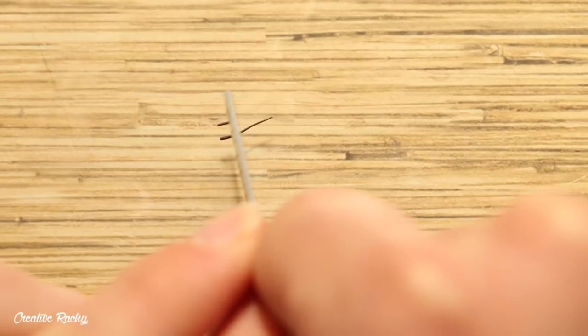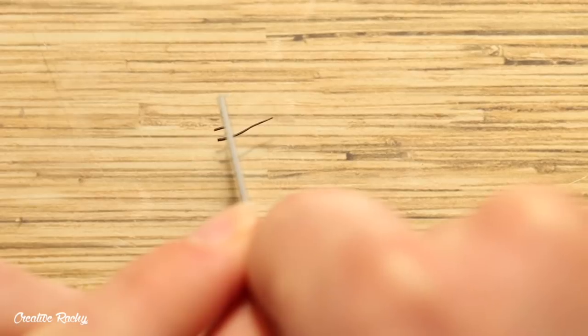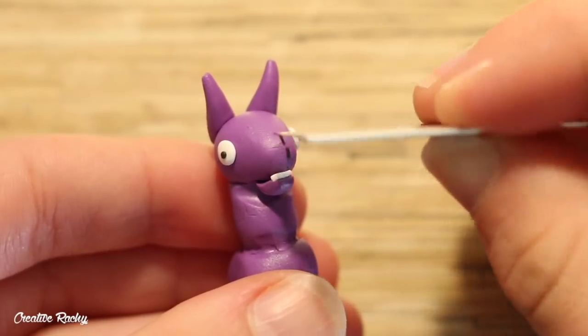For the nose roll out a thin strip of black clay and cut two even sections which you can then add to the very front of the face.